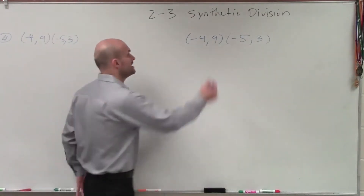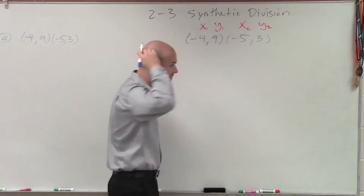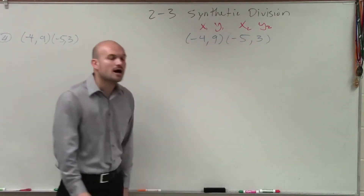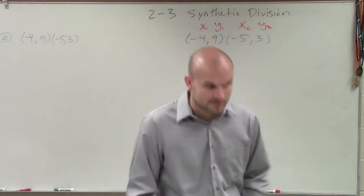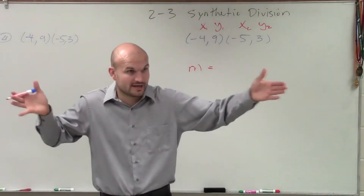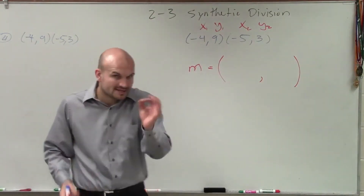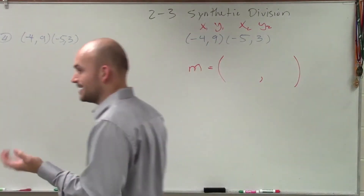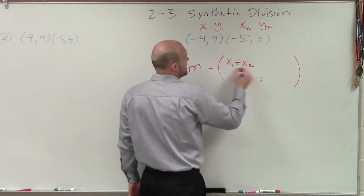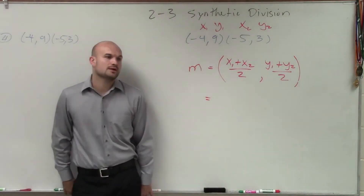Just like when we worked with the distance formula, the first thing we do is label our points x, y and x, y with subscripts one and two. The distance formula is the square root of x2 minus x1 squared plus y2 minus y1 squared. But now for the midpoint: distance gives you a length — a number — while the midpoint gives you a coordinate point that's in the middle between the two points. The midpoint formula is: x1 plus x2 divided by 2, comma, y1 plus y2 divided by 2. That's the formula we'll use.